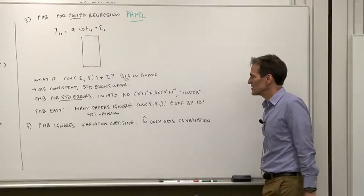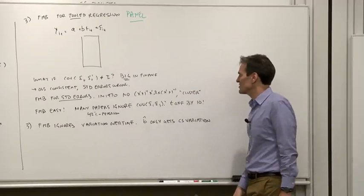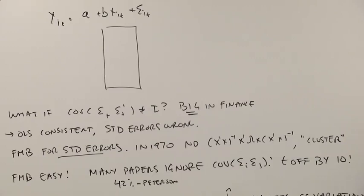So why Fama-Macbeth? Well, in 1970, when Fama and Macbeth were writing, nobody knew the formula for how do you correct OLS regressions for cross-correlation of the error terms. Either that formula or the now pervasive cluster command just hadn't been invented. So Fama-Macbeth is both an easy and a very clever way to solve that outstanding problem.